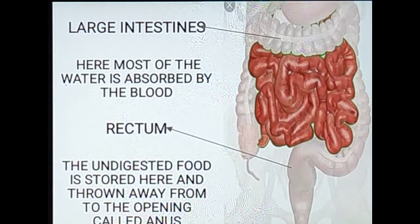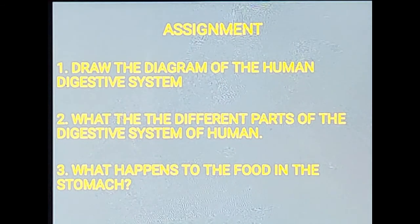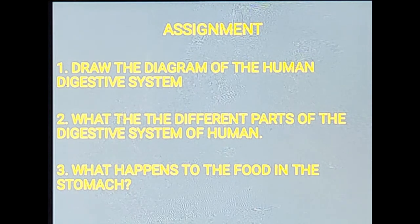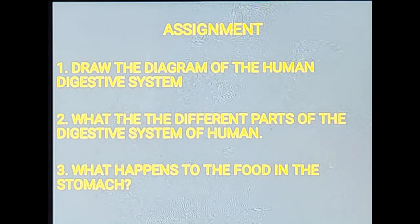I hope the digestive system and the journey of our food is clear to you. Now let us move to the assignment. Your assignment is: number one, draw the diagram of the human digestive system with different parts labeled; number two, what are the different parts involved in the digestive system of a human; and number three, what happens to the food in the stomach. These three are your assignment for today. Thank you students — stay safe and stay healthy.